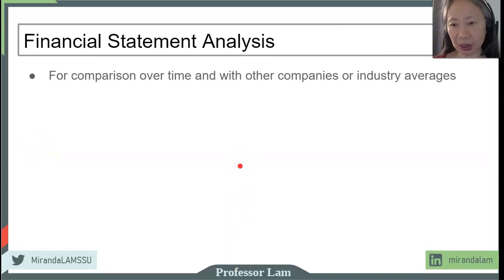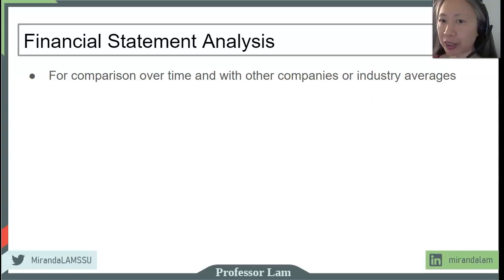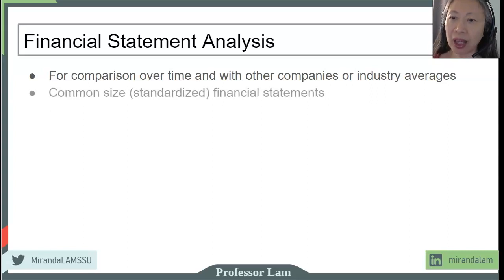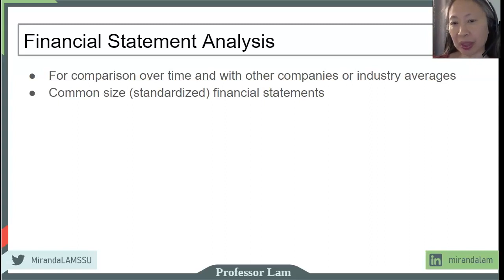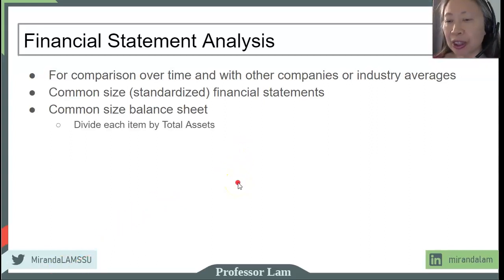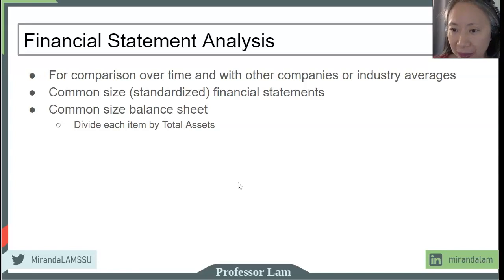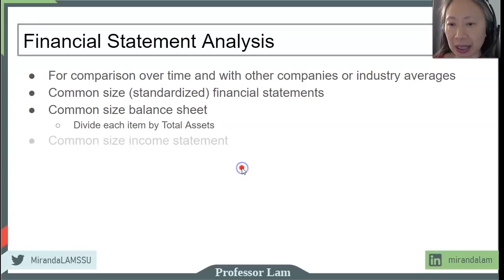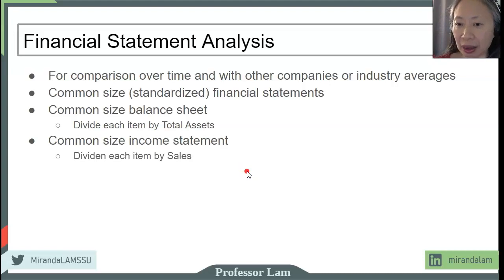There are a number of factors we want to take into account. One is that we want to ensure we will be able to compare the performance of our company over time and against other companies such as its main competitors as well as the industry as a whole. To do that, we can create something called common size or standardized financial statements — both a standardized income statement and a standardized balance sheet. For the common size balance sheet, we convert the numeric values into a percentage by dividing each item by total assets. For the common size income statement, we convert each dollar amount into percentages by dividing each item by sales.